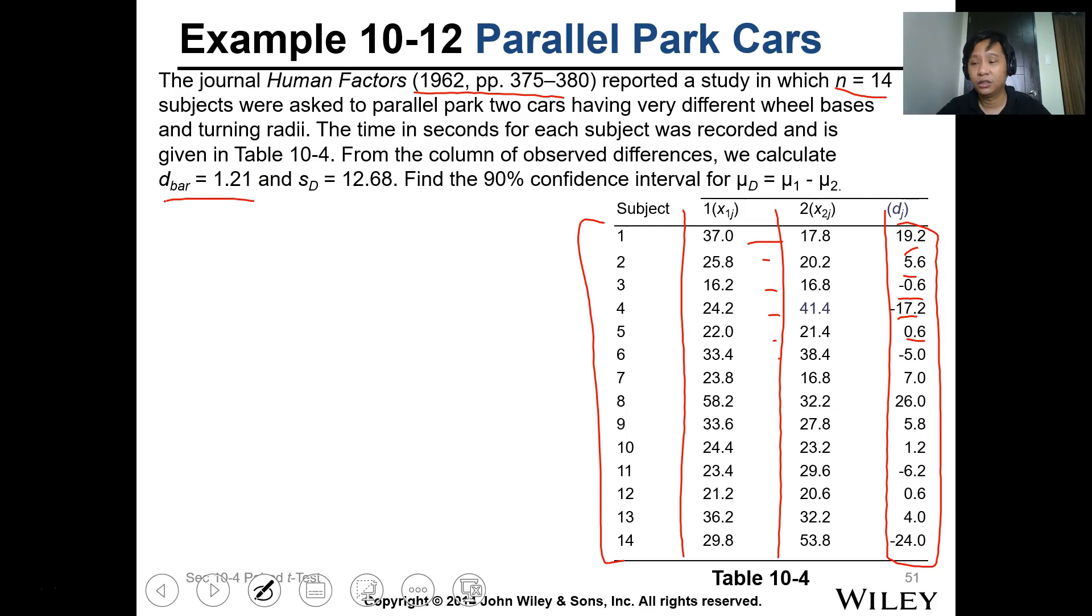So you can just input it in the calculator. You should know how to input data. If not, we can discuss it later. Then the sd is 12.68. The question is asking for the 90% confidence interval. So our alpha here is 0.1, and it's a two-sided confidence interval. So we need to find t alpha over 2 with n minus 1, which is 13 degrees of freedom.